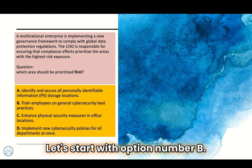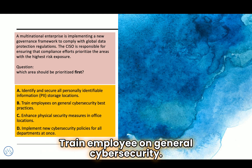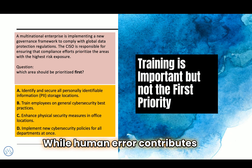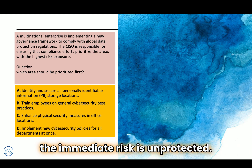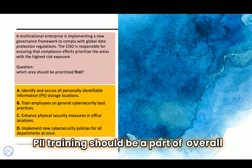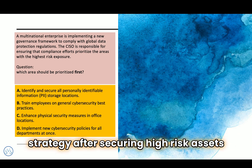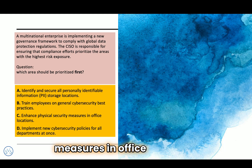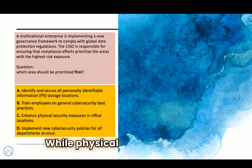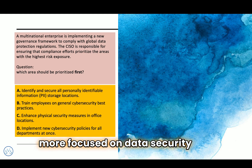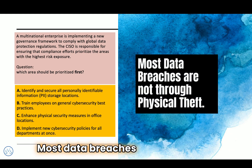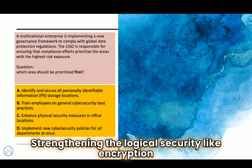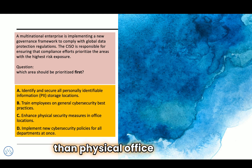Option B — train employees on general cybersecurity best practices — is important but not the first priority in regulatory compliance. While human error contributes to breaches, the immediate risk is unprotected PII. Training should be part of the overall compliance strategy after securing high-risk assets like PII. Option C — enhance physical security measures in office locations — is less critical here. While physical security matters, compliance efforts focus more on data security and privacy risk. Most data breaches occur through cyber attacks, not physical theft. Strengthening logical security like encryption and access controls is more critical than physical office security.